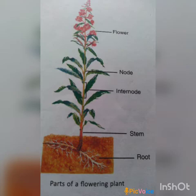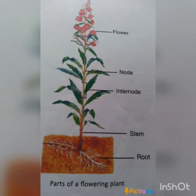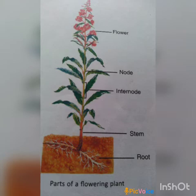Now we will discuss all parts of the shoot system one by one. The first one is the stem. The main part of the shoot system which grows upwards above the ground is called the stem. The stem bears leaves located at regular intervals. Such places from where the leaves come out are known as nodes. The portion between two nodes is called an internode.